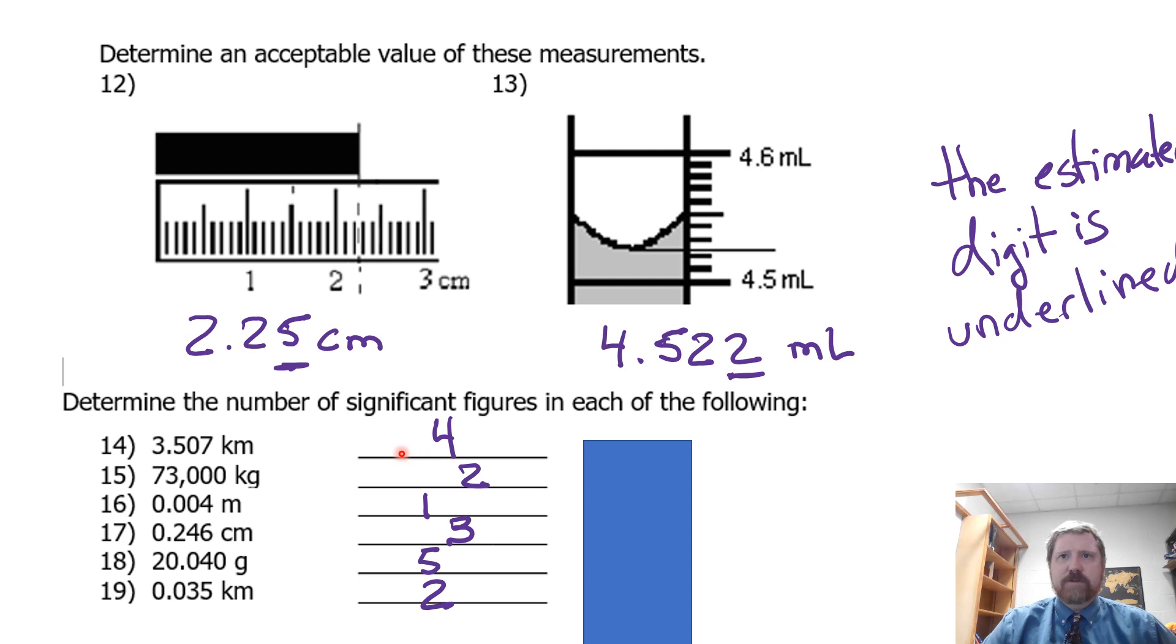And then again, determine the number of significant figures. Lefties never count. Righties only count if there's a decimal. Trapped. So these are the same set of rules. Man, that laser pointer, that was good stuff. Look at that. Trapped. I mean, lefty, lefty, lefty. Right, right, right. Trapped. Trapped, trapped.